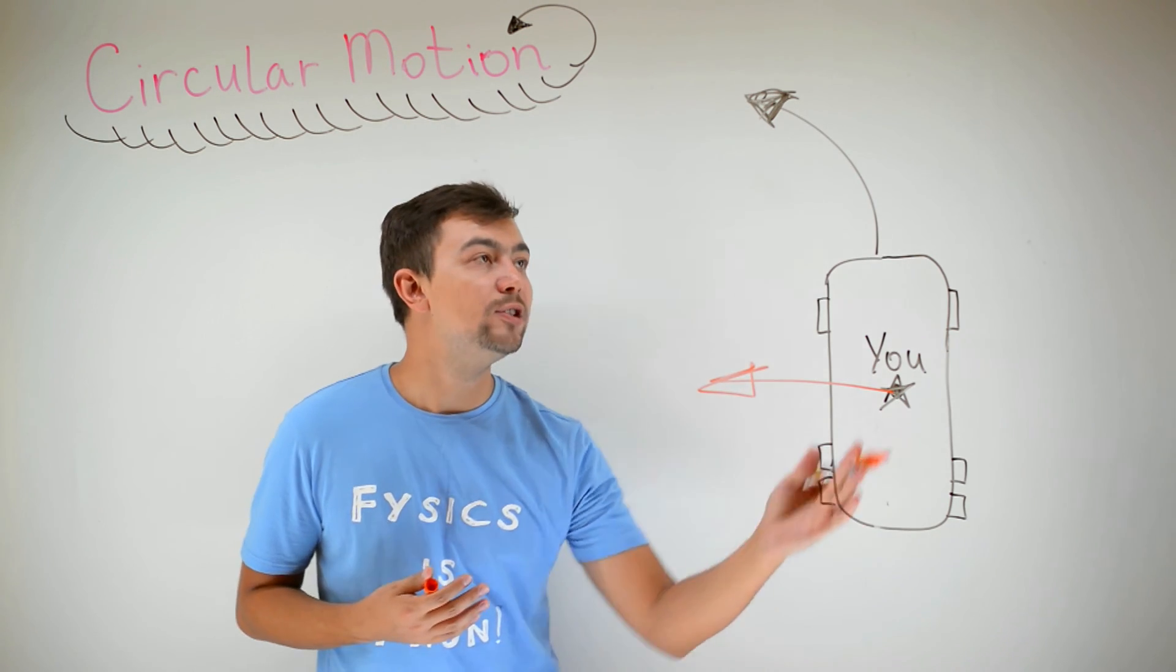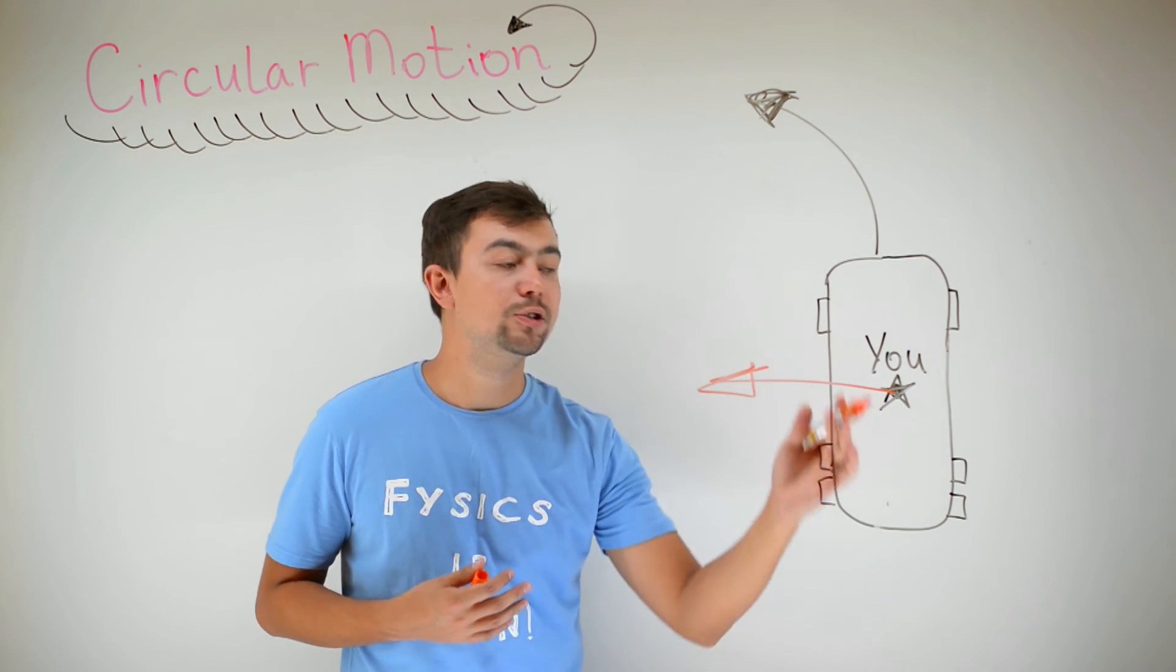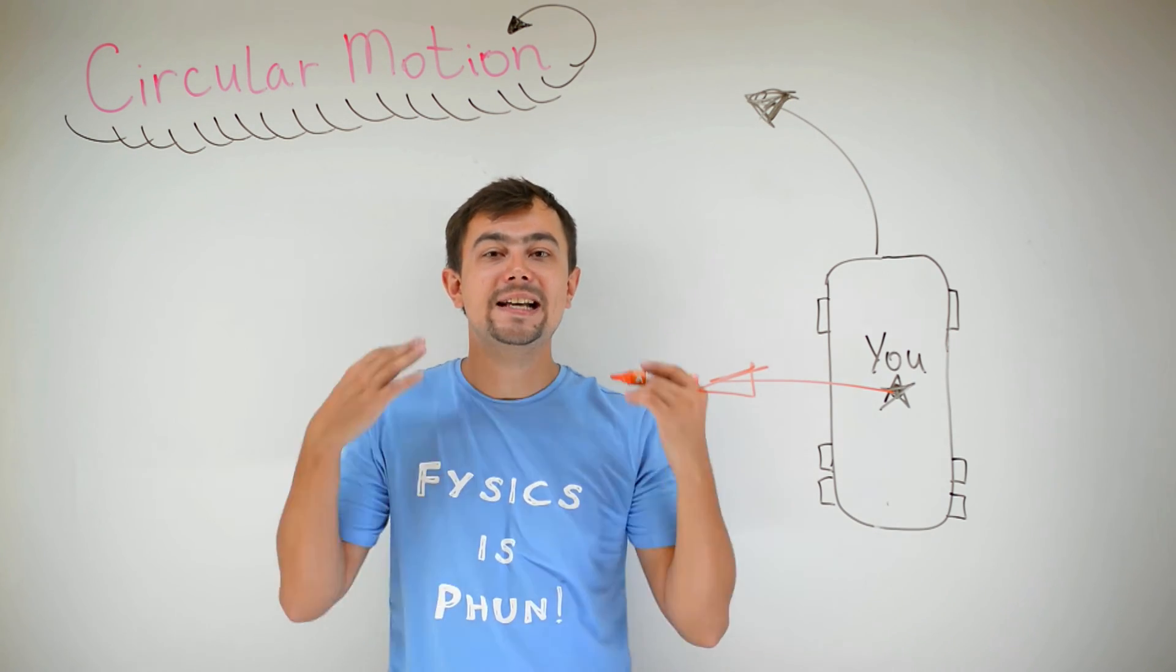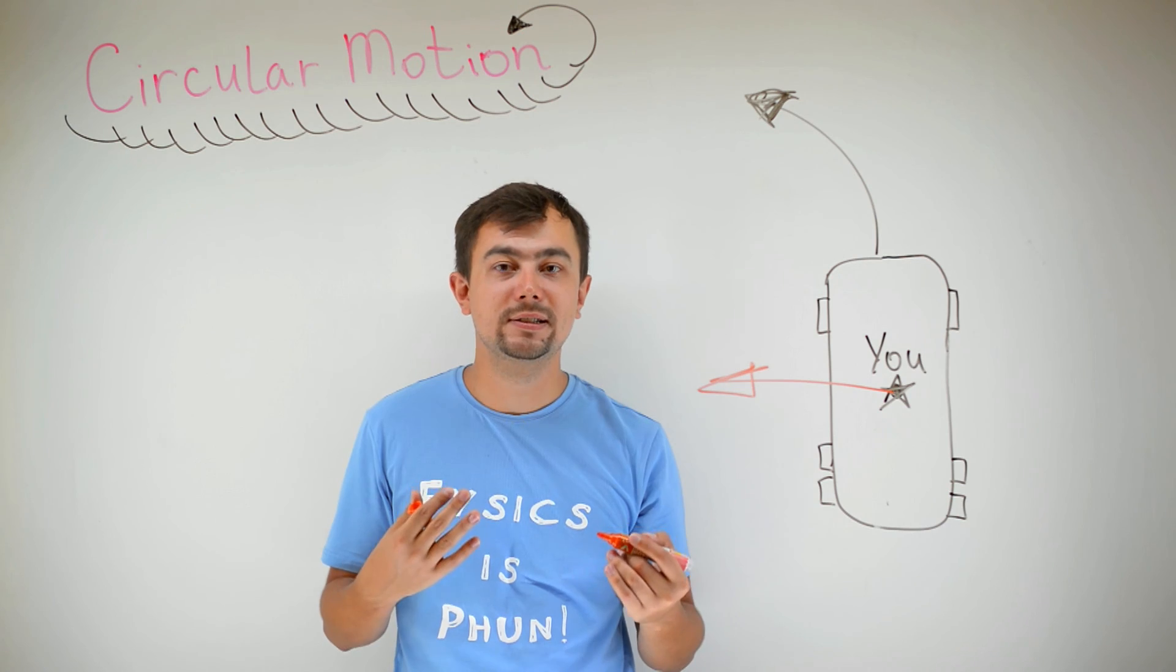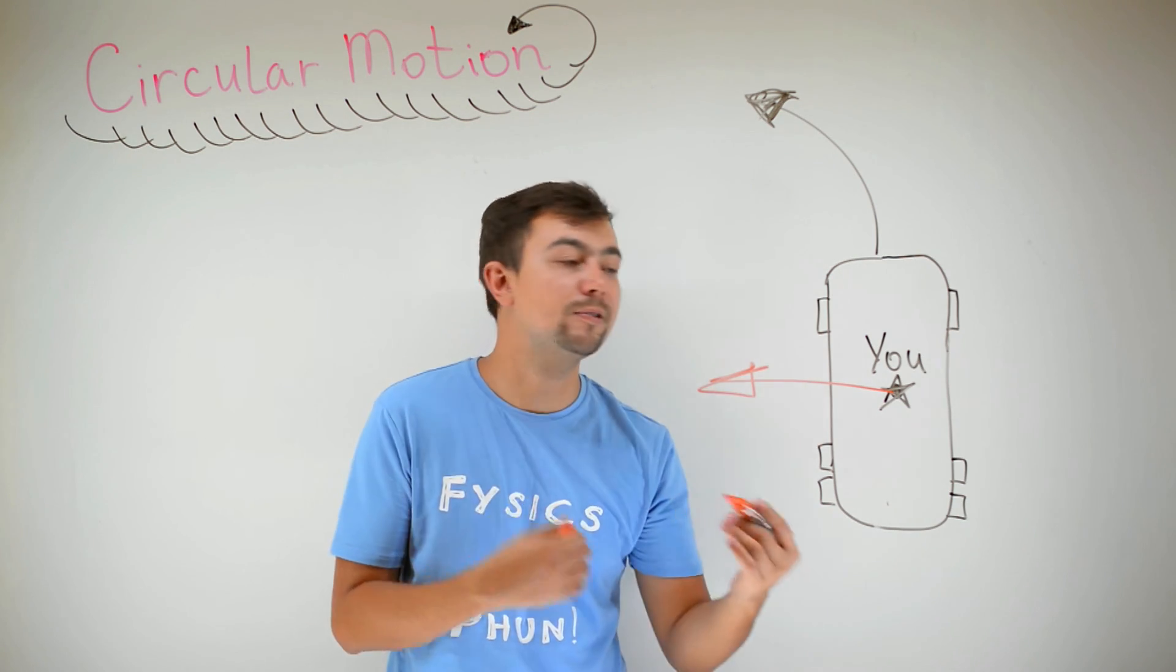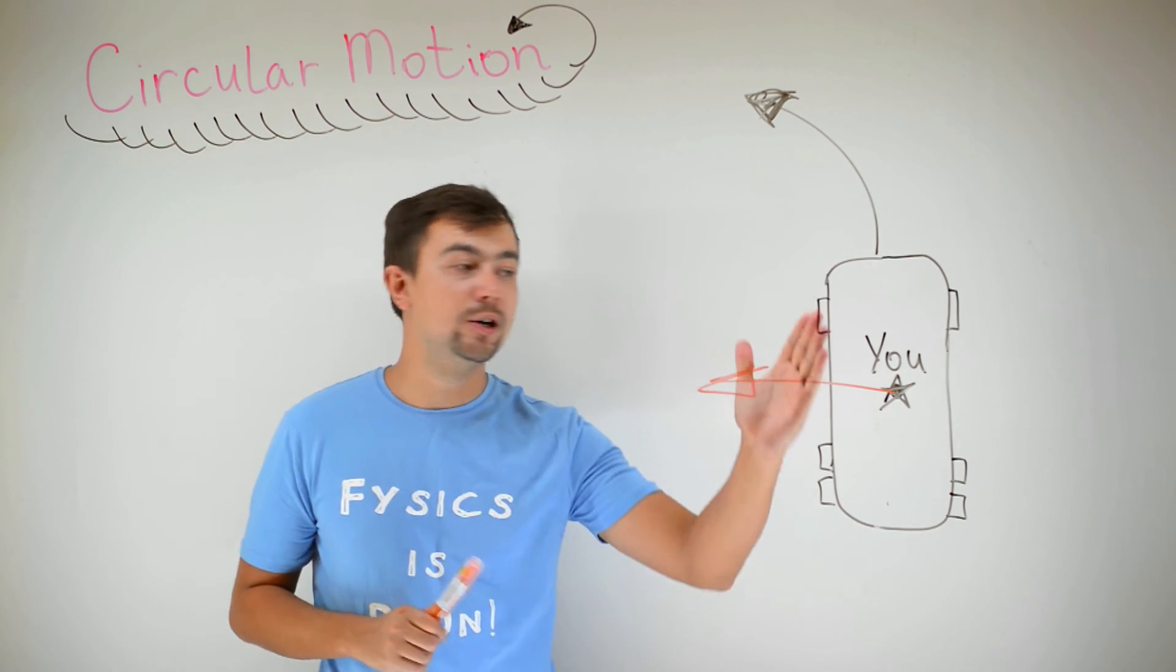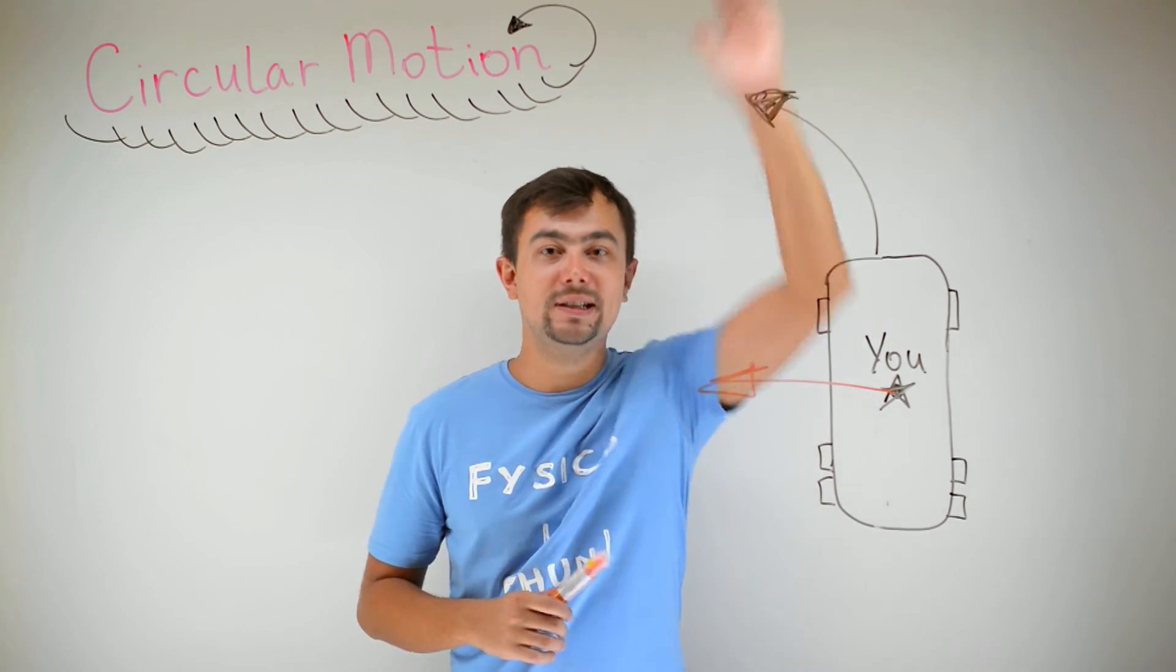Because when the bus turns, you also turn. And to move in circles, you need a centripetal force. Which, in this case, is provided by the window of the bus. If there was no window, you would continue moving in a straight line, and the bus would turn left.